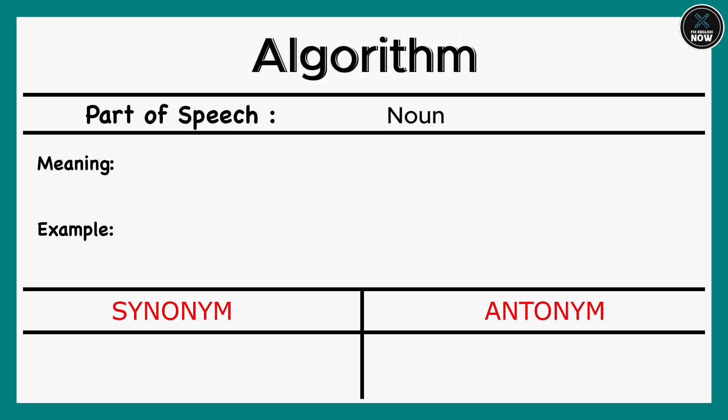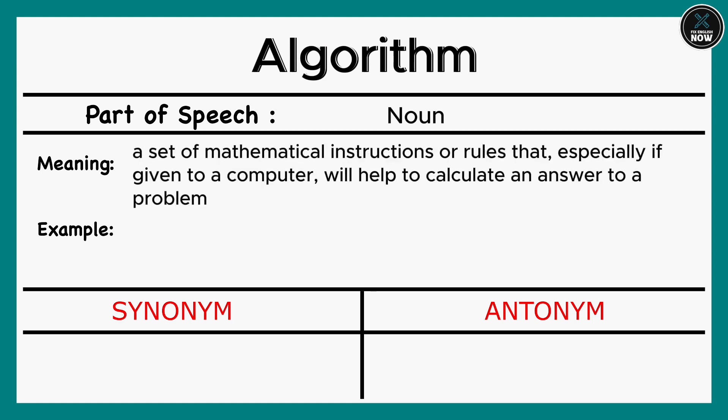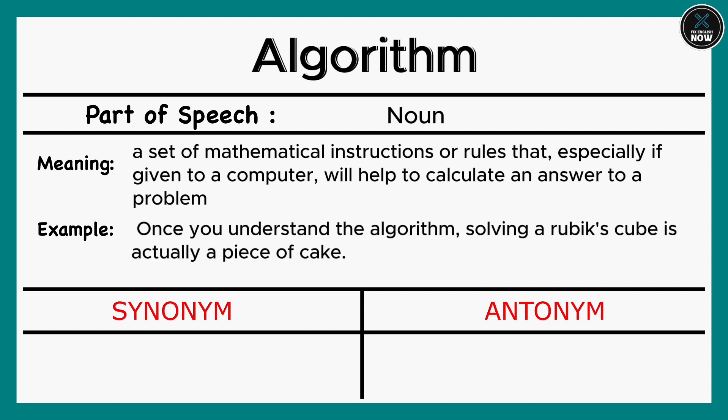Algorithm: A set of mathematical instructions or rules that, especially if given to a computer, will help to calculate an answer to a problem. Example: Once you understand the algorithm, solving a Rubik's Cube is actually a piece of cake. Synonyms: Computation, Formula, Calculation.